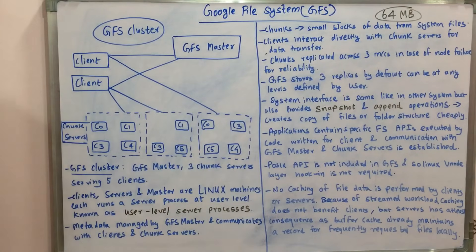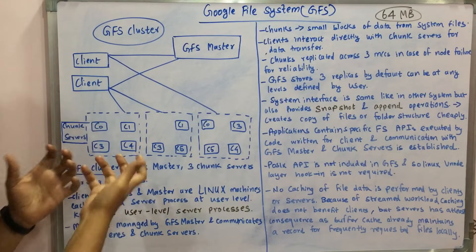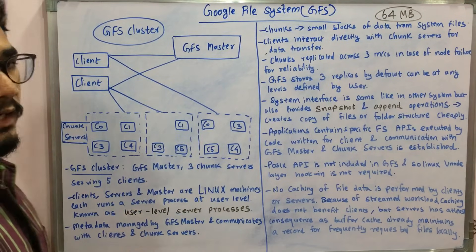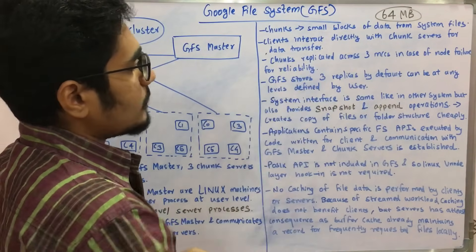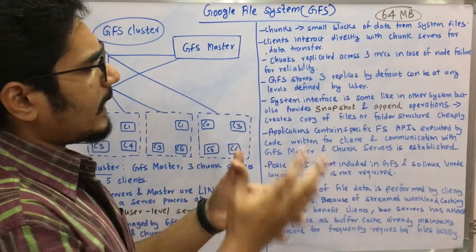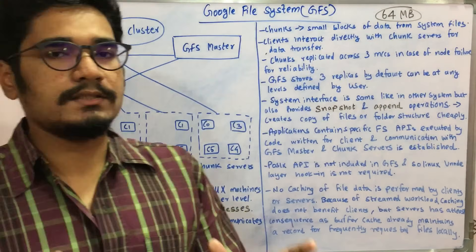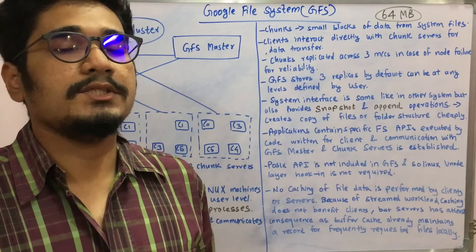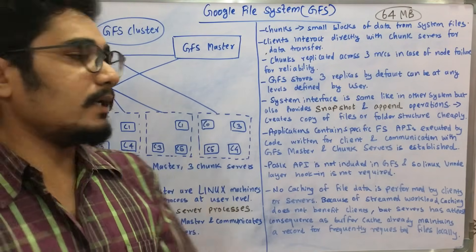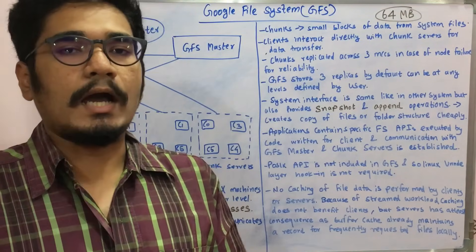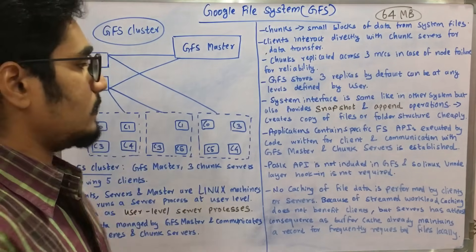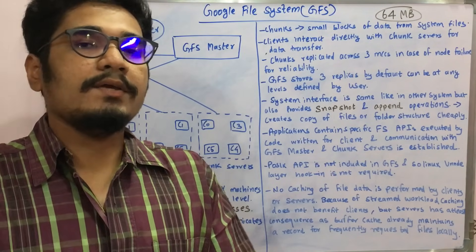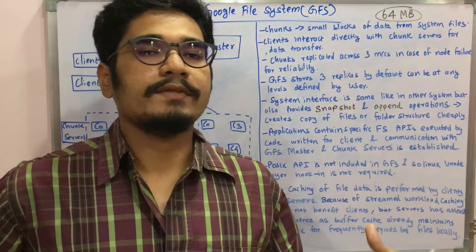In case of any node failure, if C0 is inaccessible you can obtain it from a third instance, or if C5 is not there you can obtain it from the third cluster. GFS stores three replicas by default, but this can be set to any level defined by the user. The user can maintain the default three levels of replication or increase to five, six, or higher, and the cluster size will grow accordingly.